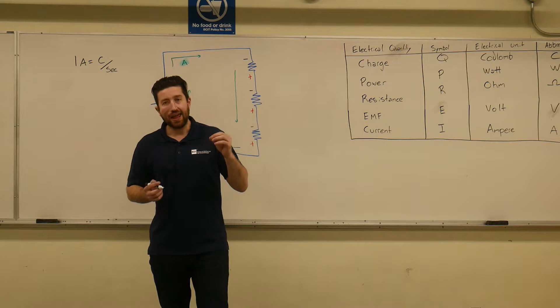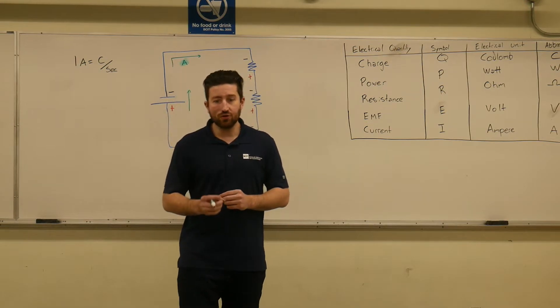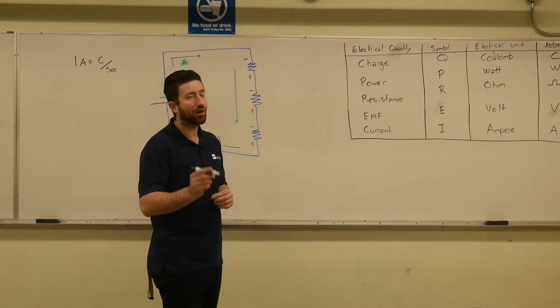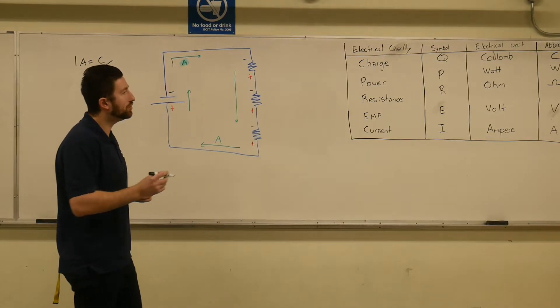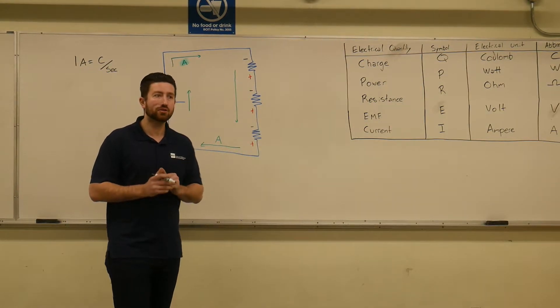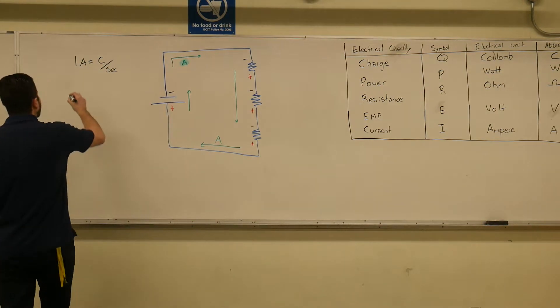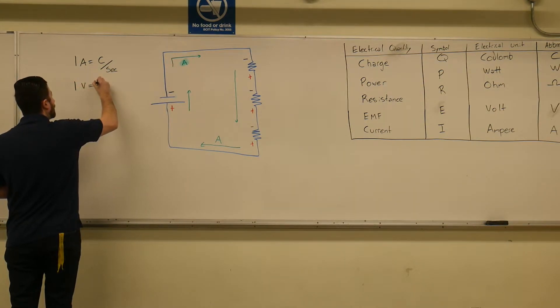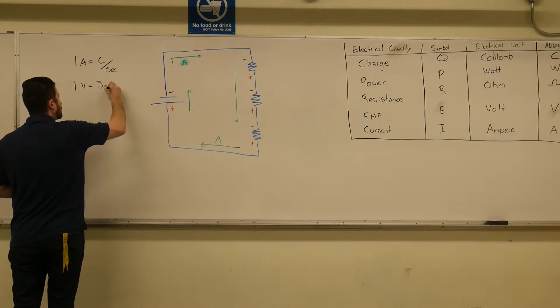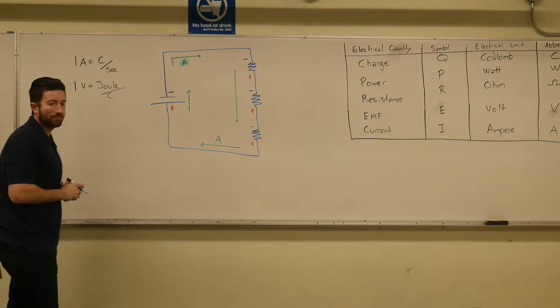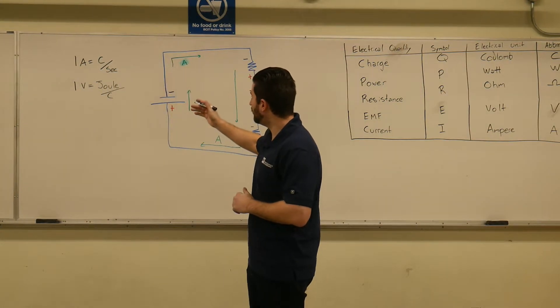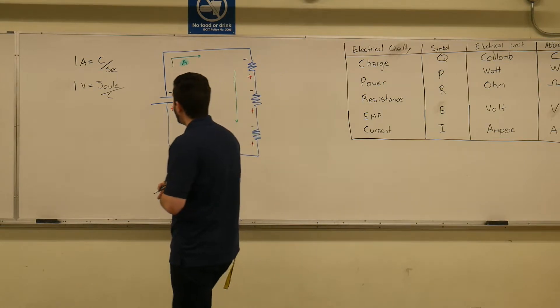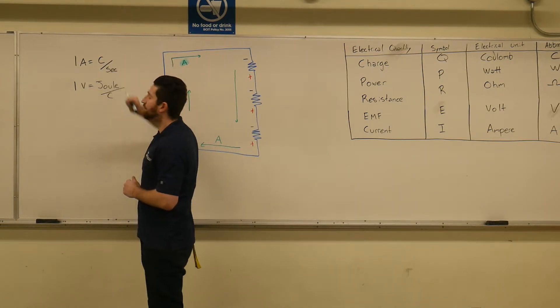The energy used to move the coulombs is something called a joule. So, the energy used to move the coulombs is a joule. So, one volt is going to equal a joule per coulomb. Joule per coulomb is a volt and an amp is a coulombs per second.